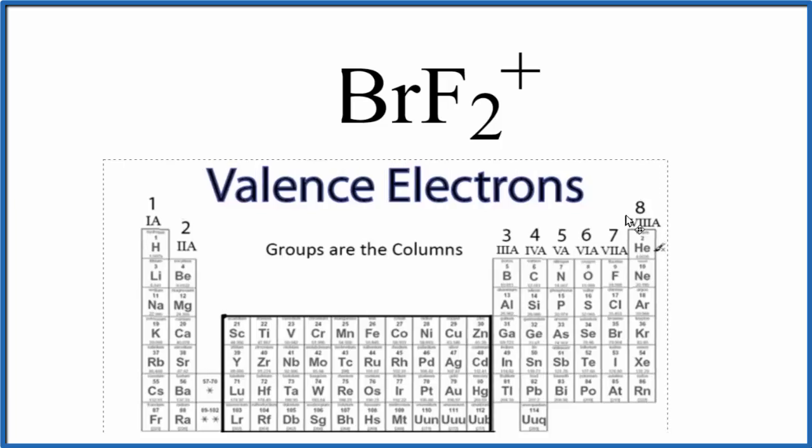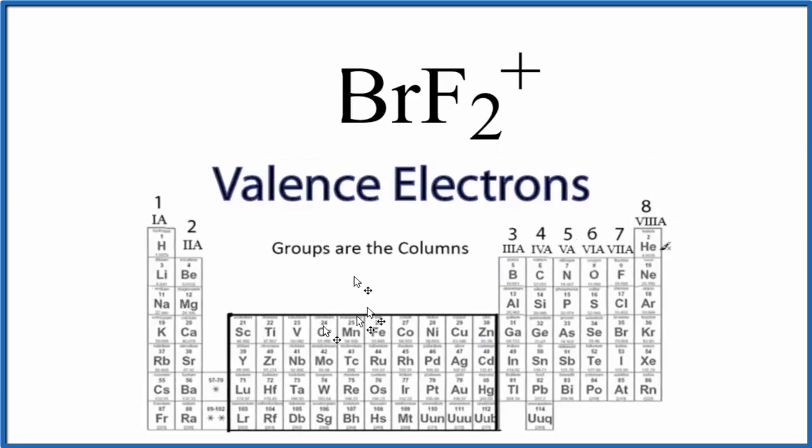Let's take a look here on the periodic table, and we have those valence electrons written in here. We find bromine right here. It's in group 7A, also called 17, 7 valence electrons.